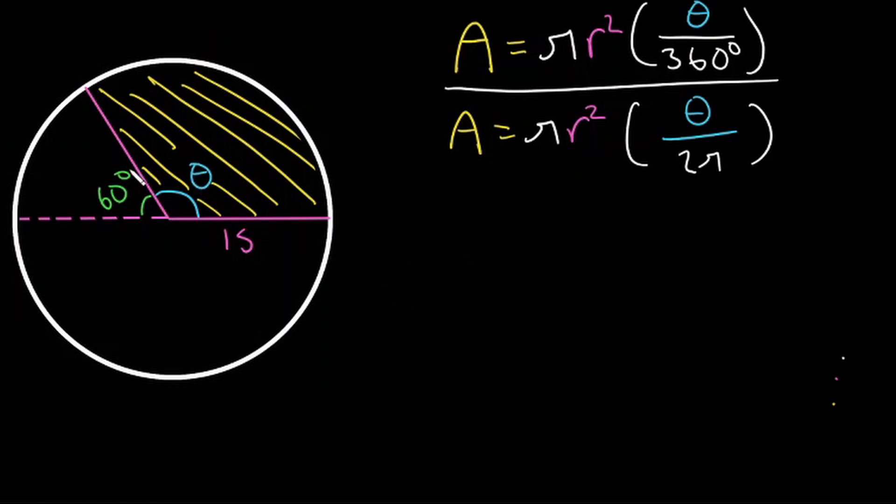It seems that 60 and theta are supplementary angles which means they add up to 180 degrees. So to solve for theta we can subtract 60 from 180 and that's going to be equal to 120 degrees. So theta is equal to 120 degrees.